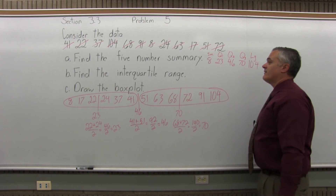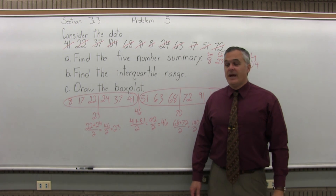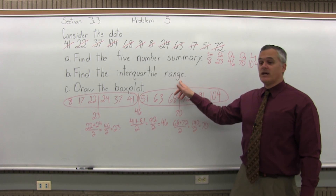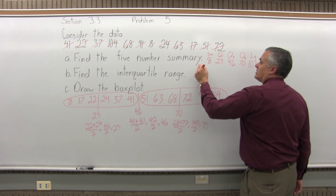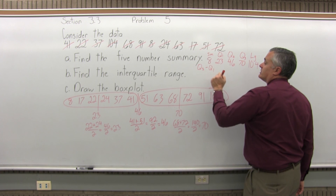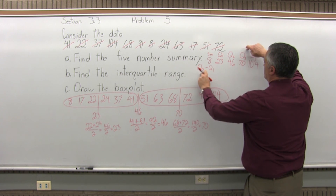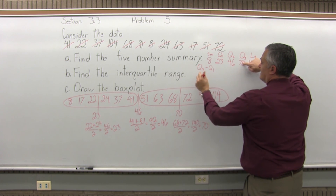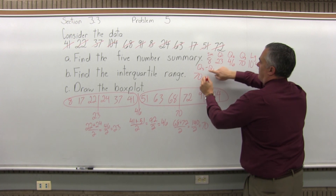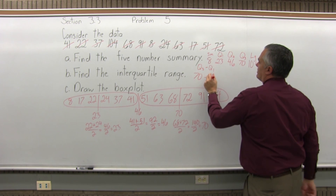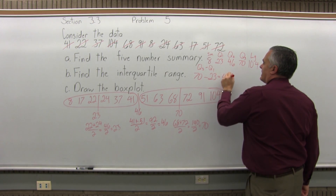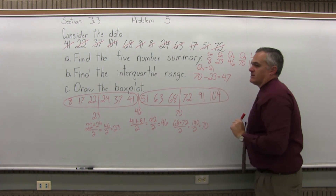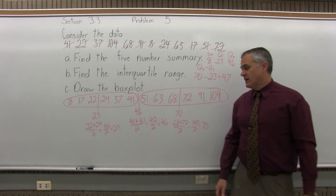So there's our five-number summary. Next, part B: find the interquartile range. The interquartile range is Q3 minus Q1. For this problem, Q3 is 70 minus Q1 is 23. 70 minus 23 gives us 47. So the interquartile range is 47.